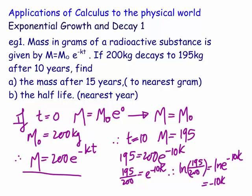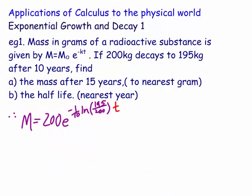This allows us to find what k is. Therefore, k is equal to minus 1 over 10 ln of 195 over 200. So that's what k is going to be. You can see here I've written the k in, so M is equal to 200 e to the minus kt. I could actually rewrite 195 over 200 as 39 over 40, but I'm just going to leave it as it is at the moment. This is an exact form. Rather than try and work out the k value and round it off to so many decimal places, we'll just leave it and work it all out at the end.